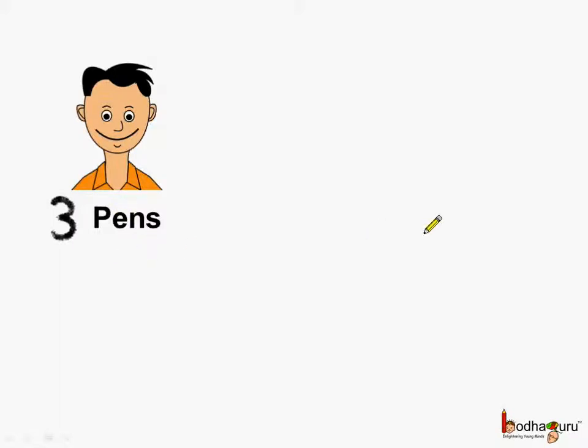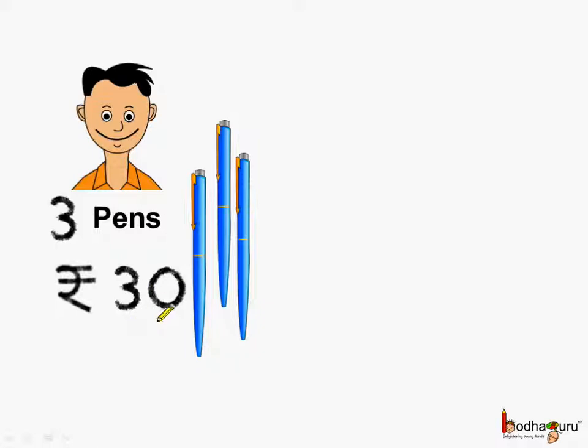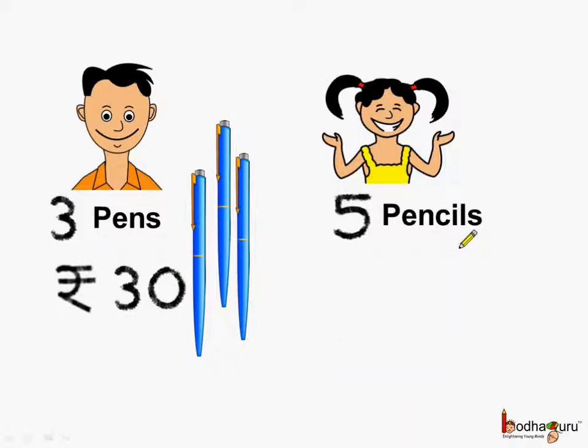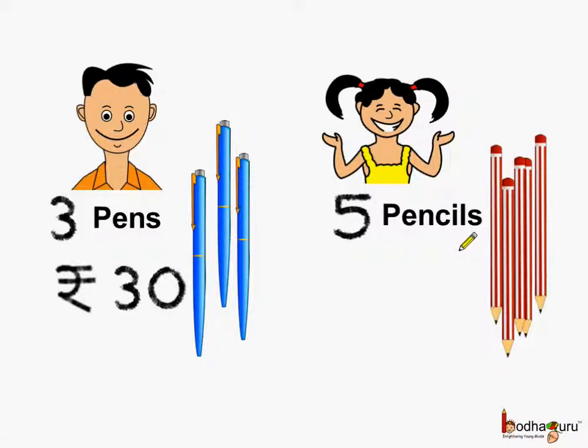Aman bought 3 pens and he paid rupees 30 for it. Khushi bought 5 pencils and she paid rupees 15. Now let's see if they are in proportion.